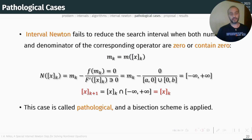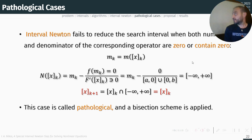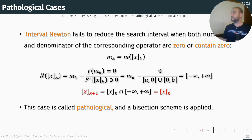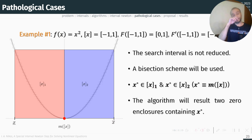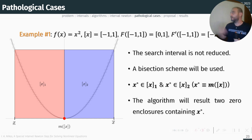Now consider a case where the Newton operator's denominator results in a problem — this happens because zero belongs to the denominator. The Newton operator then results in the real line, and the intersection results in the same interval; we have no reduction at all. This case is called pathological and we have to apply a bisection scheme to reduce the search interval. Here is an example: the function x² with a zero of multiplicity two — the search interval is not reduced when we apply interval Newton, so we resort to bisection.